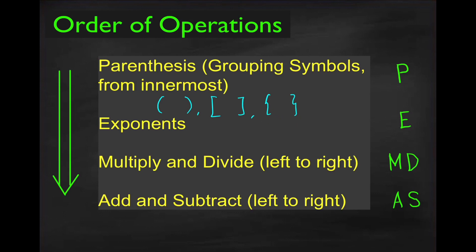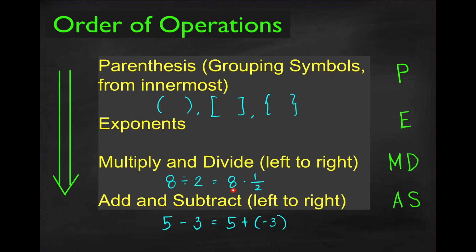You might wonder why addition and subtraction are of the same level. They are on the same level because subtraction is like addition. You may write 5 minus 3 as 5 plus negative 3. Similarly, division can be written as multiplication — 8 divided by 2 is just equal to 8 times 1 half. It seems that the only operations we have are additions, multiplications, and exponents.